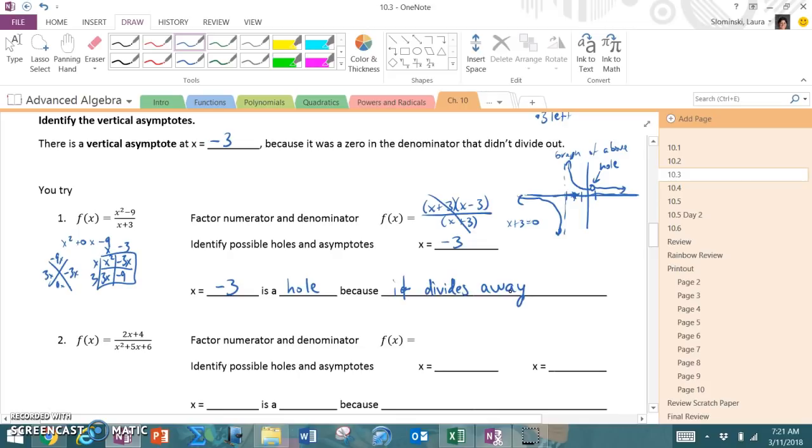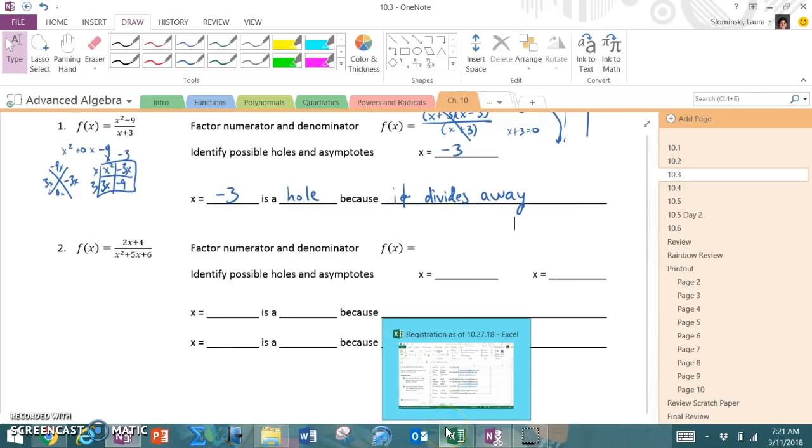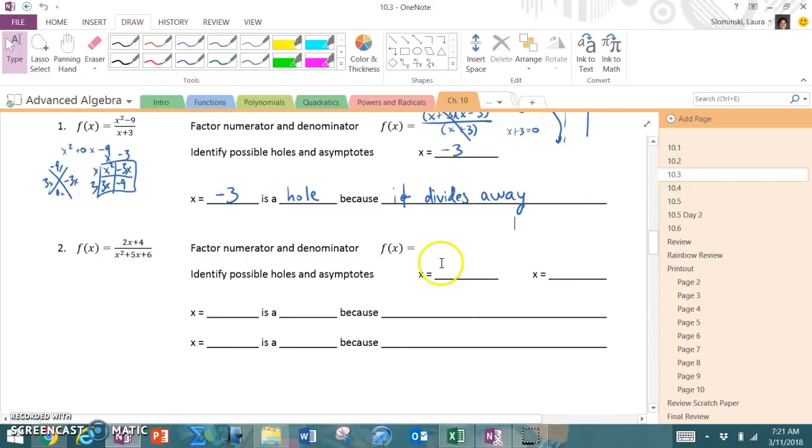Okay, so really this is the lesson for today. We just have to be really good at our factoring and identifying if things cancel, and if they do, then it's a hole. If they don't, and whatever's left, the zeros at the bottom are asymptotes.